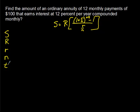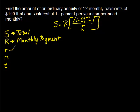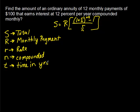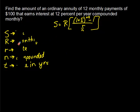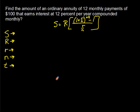We go through and break the pieces of information down. Capital S is going to be our final total — the total amount in the end. Capital R is our monthly payment. Lowercase r, just like before, is our rate. Lowercase n is the number of times it's compounded, and lowercase t is, once again, time in years. A lot of these variables are repeating and still being used the same way.